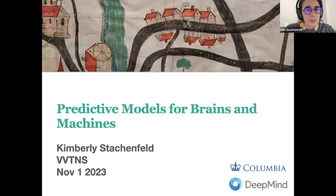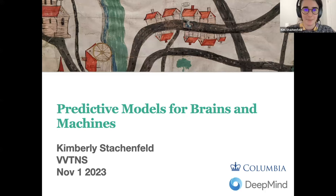Today I'm going to talk mostly about some computational neuroscience work we've done recently on building models of predictive reasoning in the brain for neuroscience purposes. I'll also talk about some related concepts in machine learning that we've been applying to making models that can do cool stuff, but maybe don't look as much like the brain.